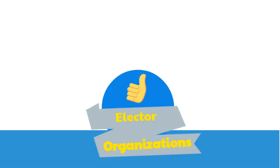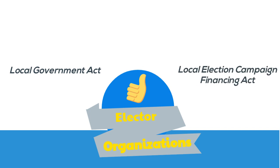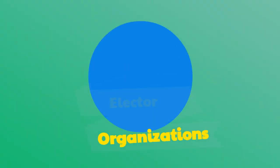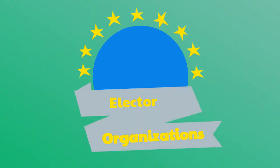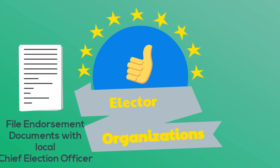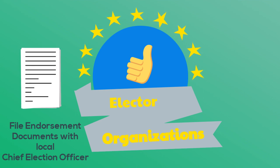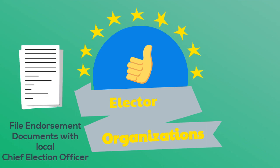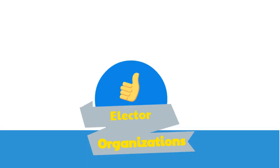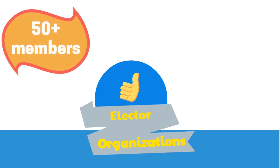Now let's learn about another participant: elector organizations, which are regulated under the Local Government Act and the Local Election Campaign Financing Act. Elector organizations are generally found in larger municipalities. They endorse candidates in local elections and file endorsement documents with the local chief election officer in order to have their name or acronym on the ballot beside the candidate they endorse. Elector organizations must have a membership of at least 50 eligible electors. For more information, check out the resources available online.